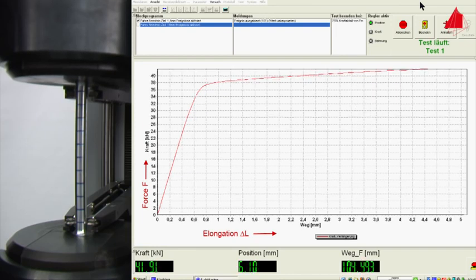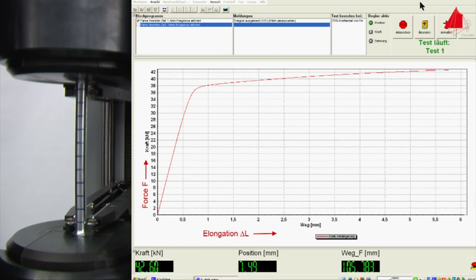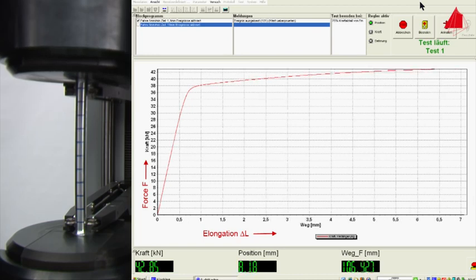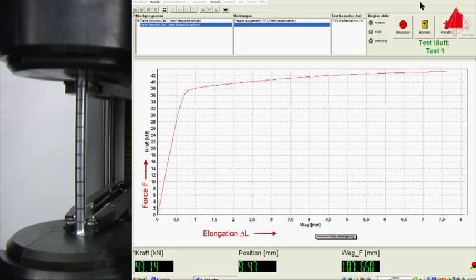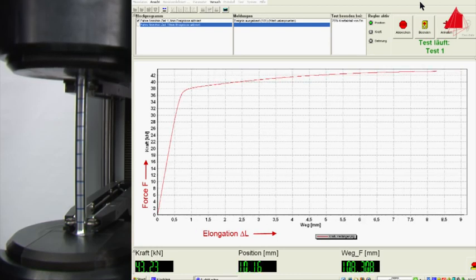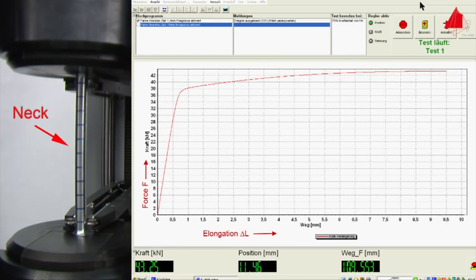In the further course of the tensile test, the force increases and the test piece again is strained uniformly along its length. At the point of maximum force, a neck develops and all subsequent plastic deformation is confined to this neck until fracture finally occurs there.